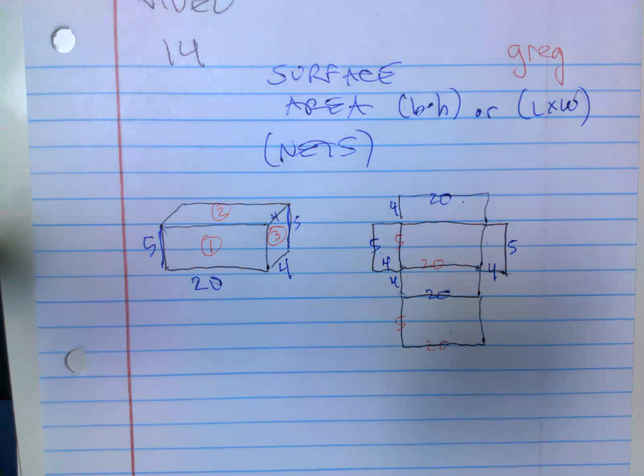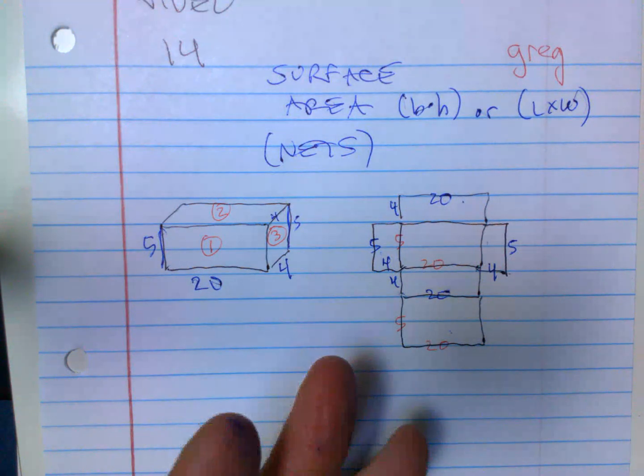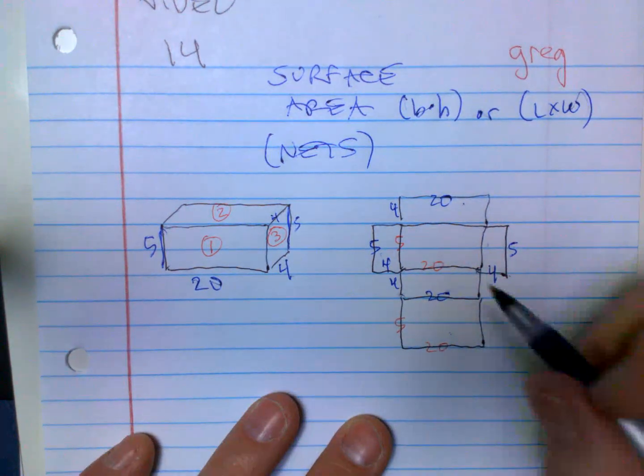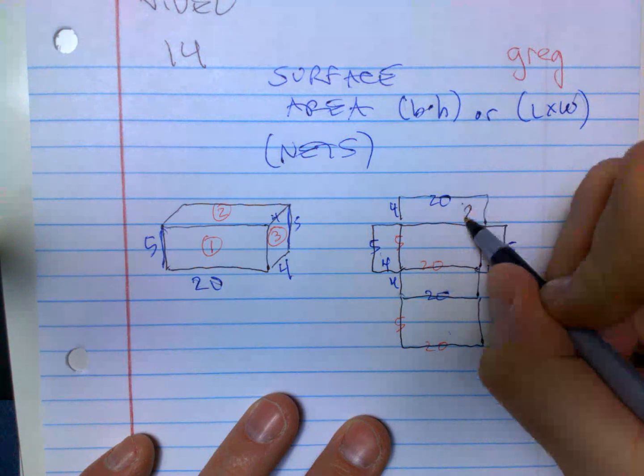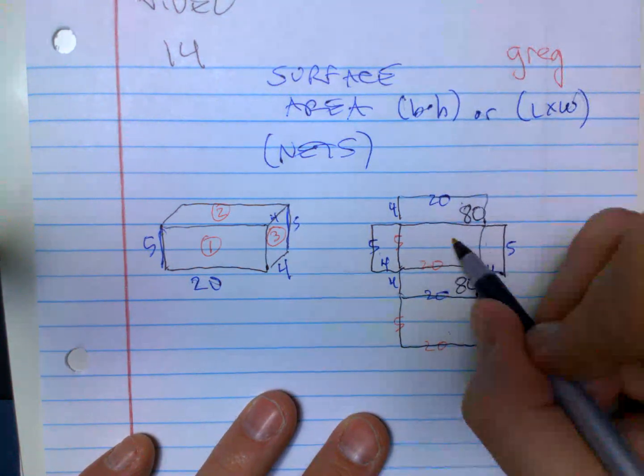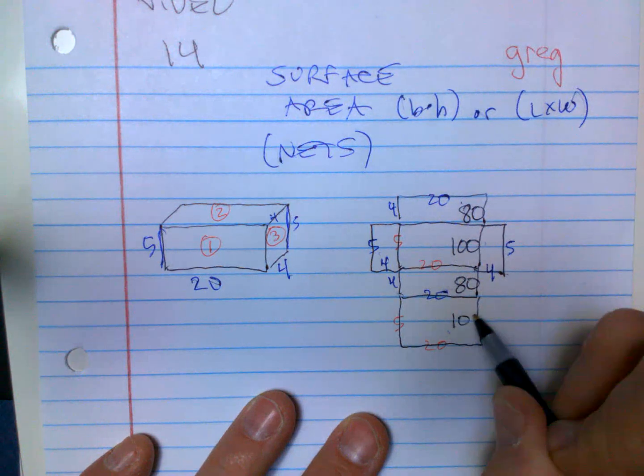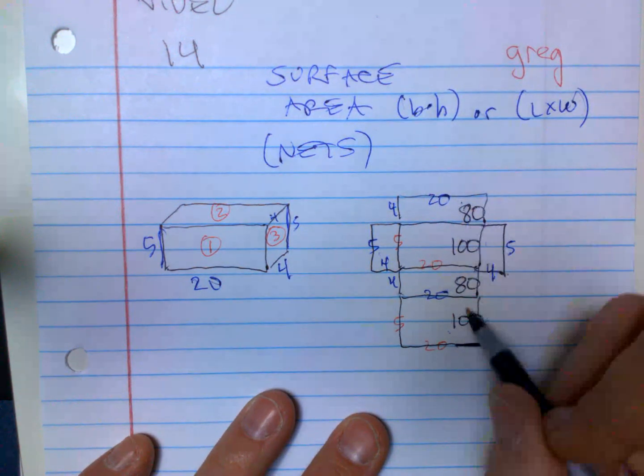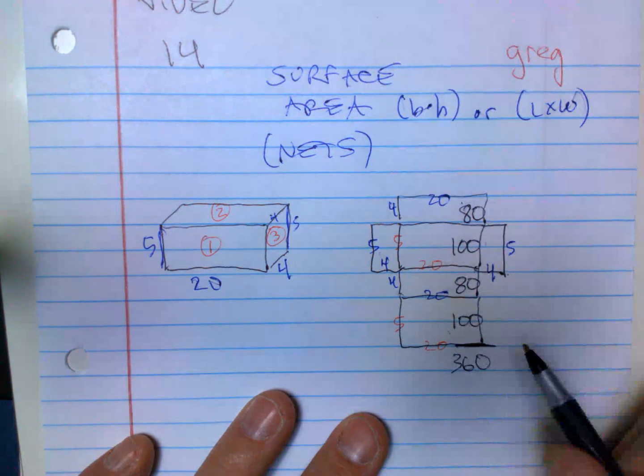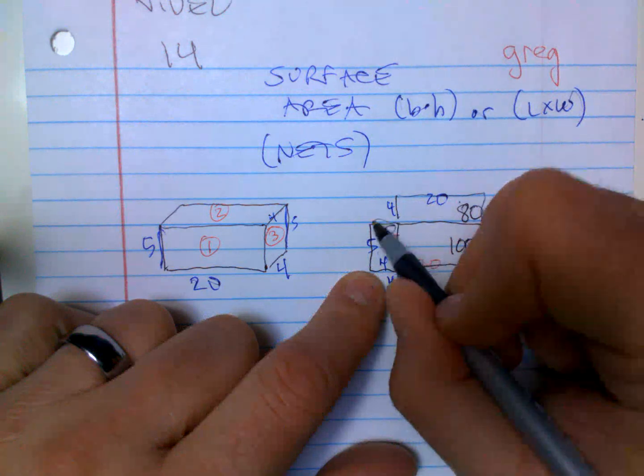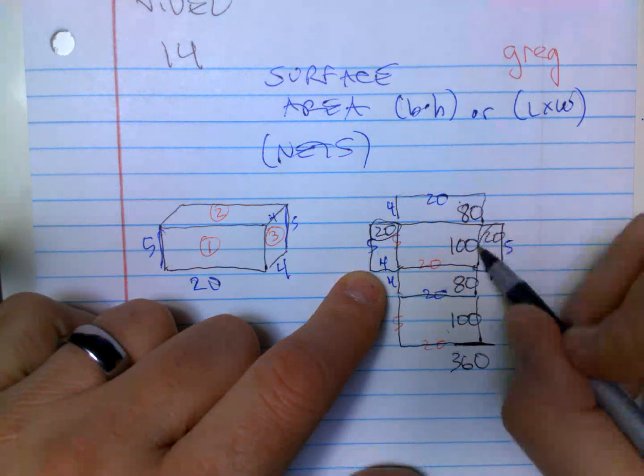So you could do each of those. 4 times 20 is 80, so that means this is going to be 80. 5 times 20 is 100, so that means this is going to be 100. If I add those all together that's 200, 360.